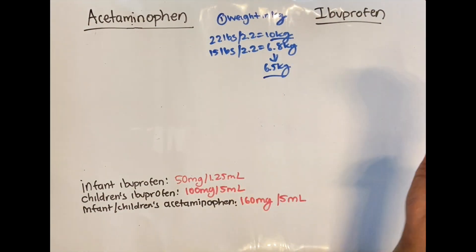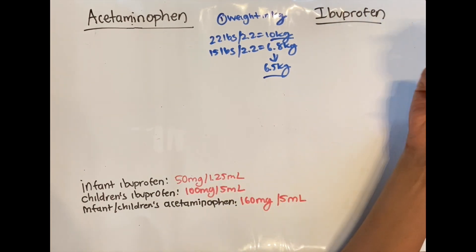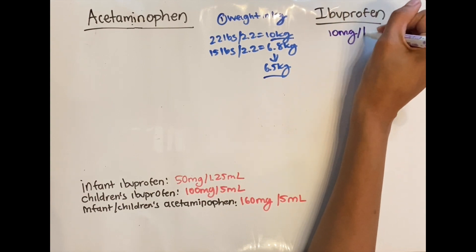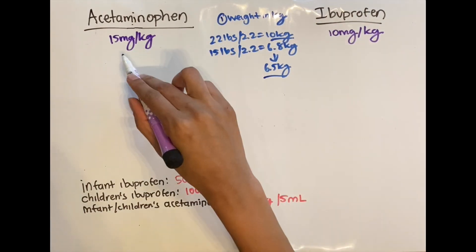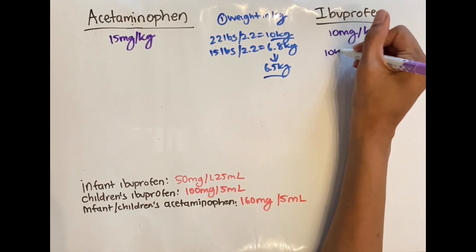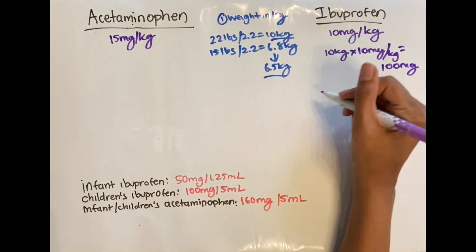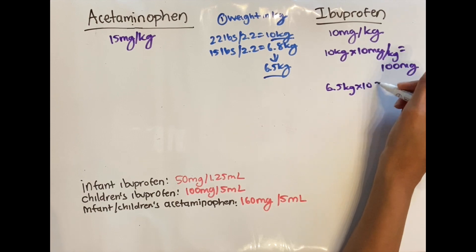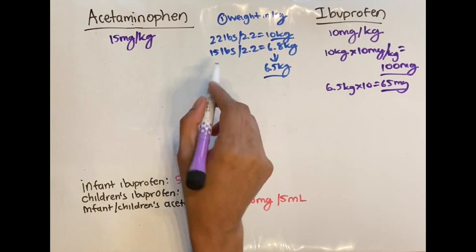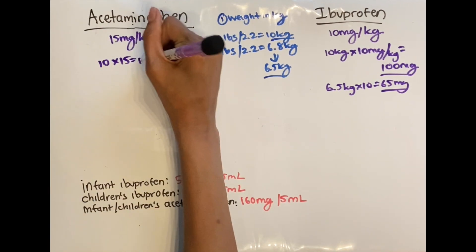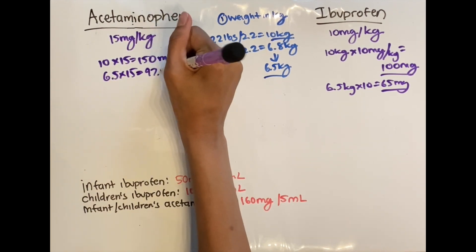Next we need to know how much medicine to give in terms of dosing in milligrams — this is not on the packaging. For ibuprofen, the dosing for children is 10 milligrams per kilo. For acetaminophen, that's 15 milligrams per kilo. So for the 10-kilo kid: 10 kg × 10 mg/kg = 100 milligrams of ibuprofen. For the 6.5-kilo kid: 6.5 × 10 = 65 milligrams. For acetaminophen: 10 × 15 = 150 milligrams for the first child, and 6.5 × 15 = 97.5 milligrams for the second child.